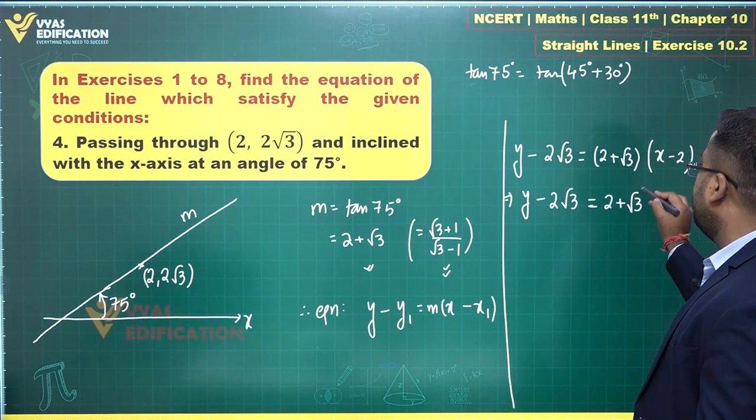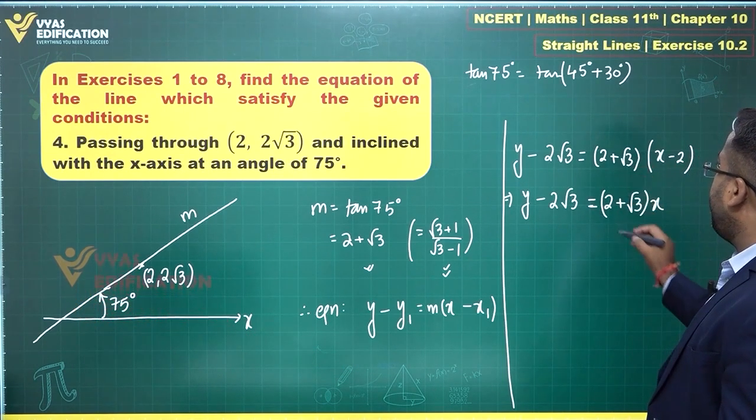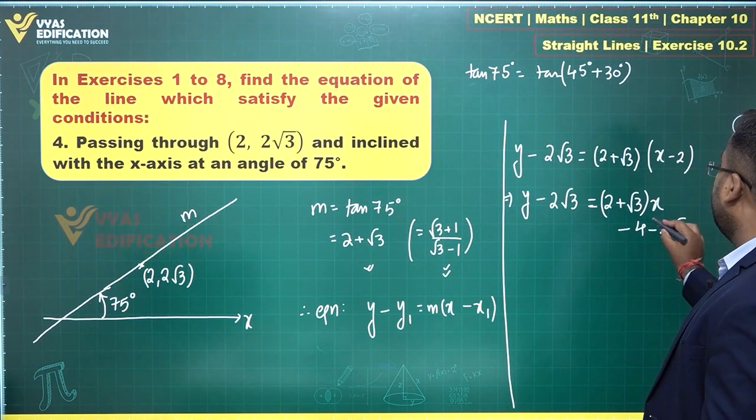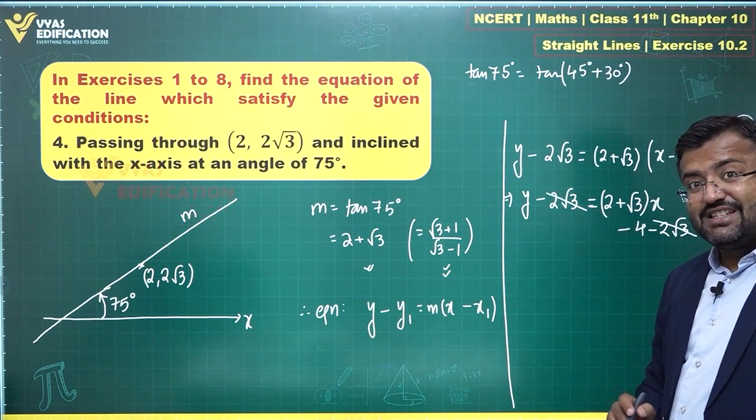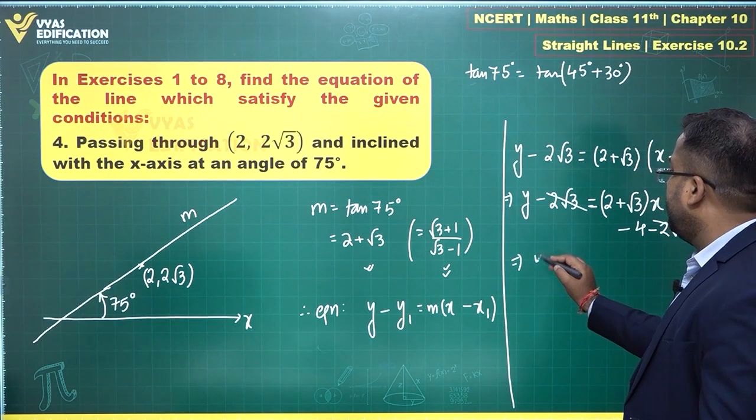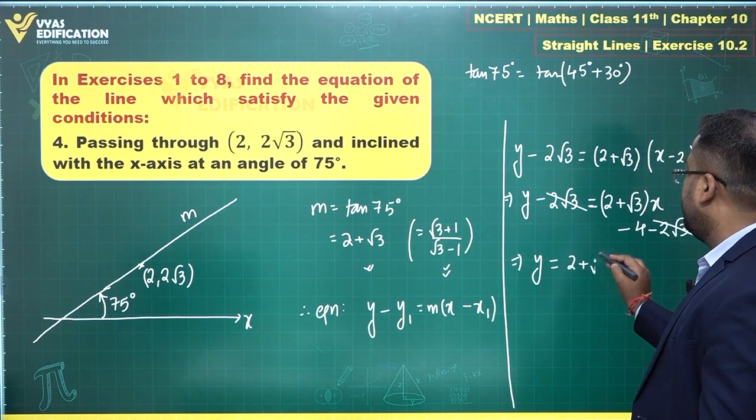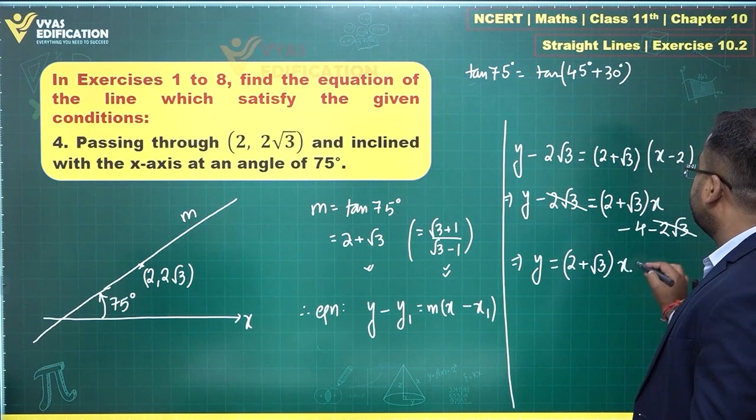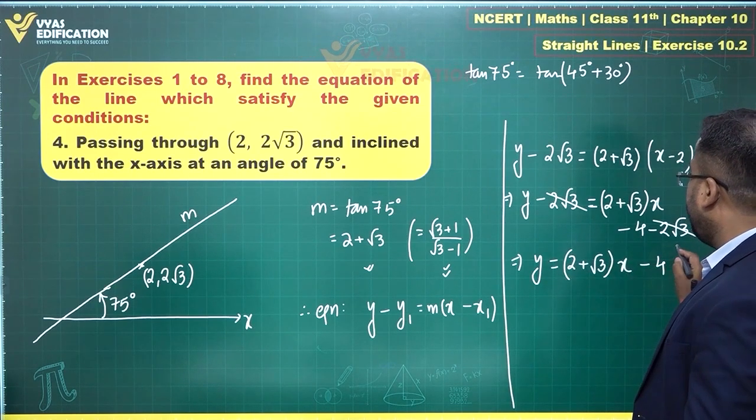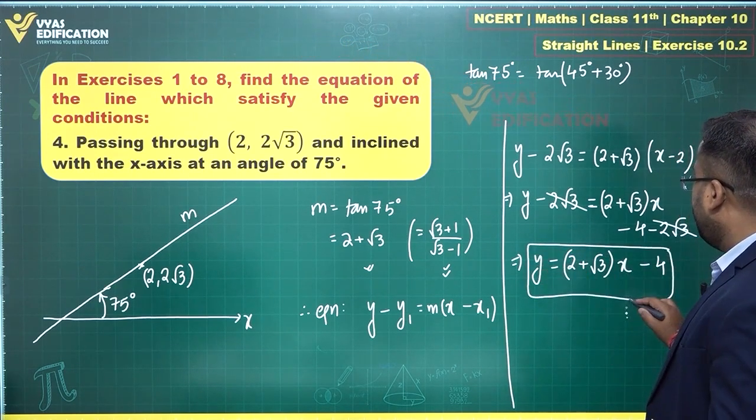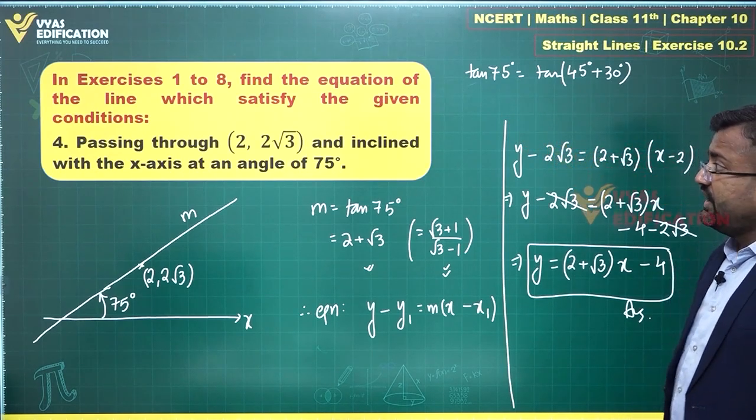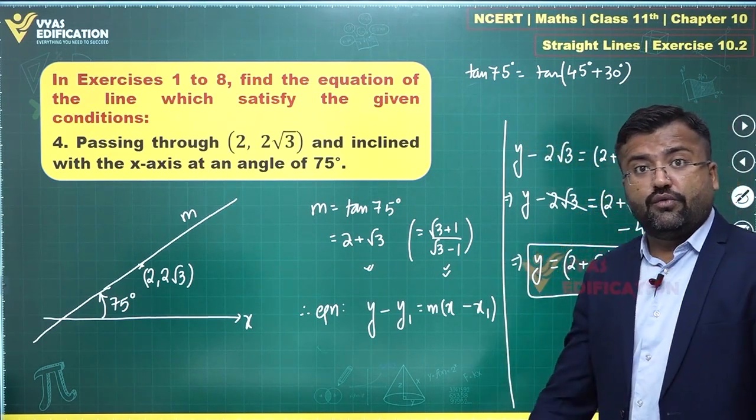Let's simplify this further. Y minus 2 root 3 is equal to 2 plus root 3 times x minus 4 minus 2 root 3. You observe minus 2 root 3 will get cancelled from both of these sides, and you get y is equal to 2 plus root 3 times x minus 4. You can bring this y also over here. This is the final answer for this question, the fourth one over here.